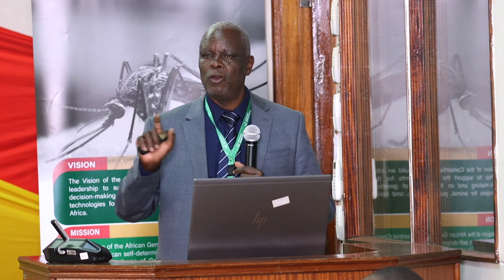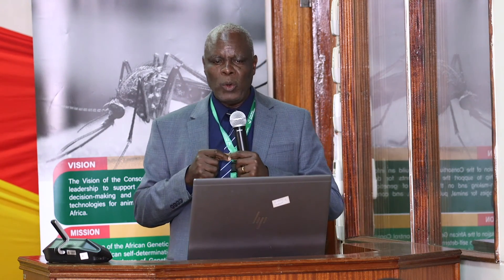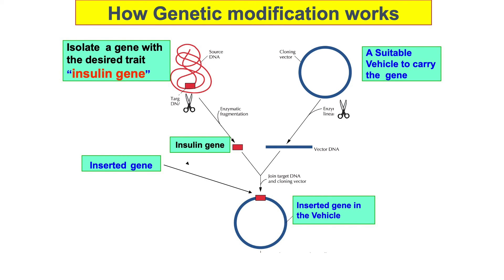Depending on the combinations of the alphabet, you will have different traits and different characteristics — defining whether a plant has disease resistance or drought resistance. Basically, it is those traits that are utilized during DNA modification. The starting point is being able to identify a section of the DNA that defines the particular trait you are interested in.